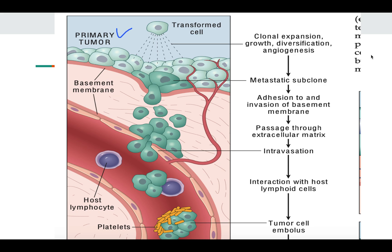Firstly, there is a primary tumor, then the basement membrane, then the extracellular matrix, and then a vessel. In this diagram we are understanding about hematogenous spread. Similarly, there is a lymphatic spread also. The primary tumor will clonally expand itself, form angiogenesis, and grow over the primary site. Then there are certain tumor subsets which are formed that can metastasize — these are known as metastatic subclones.